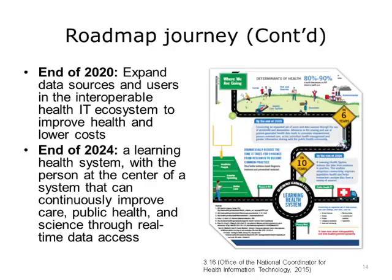Moving on our journey, at the end of 2020, we will now have expanded data sources and users in the interoperable health IT ecosystem to improve health and lower costs. This means data sources from places not just doctors' offices, eligible providers, or eligible hospitals — going beyond to rehabilitation facilities, home health agencies, etc. We will be getting information from patients and new technologies like telehealth and mobile devices. By the end of 2024, we will have achieved a learning health system with the person at the center of that system, continuously improving care, public health, and science through real-time data access. We will have arrived at interoperable health IT.